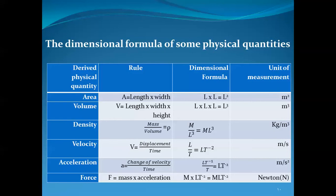Finally, the derived physical quantity force. Force equals mass times acceleration. The symbol of mass is M (capital). The dimensional formula of acceleration is L·T to the power negative two. Therefore, the dimensional formula of force is M·L·T to the power negative two. The unit is called the Newton, or equivalently kilogram·meter per second squared.